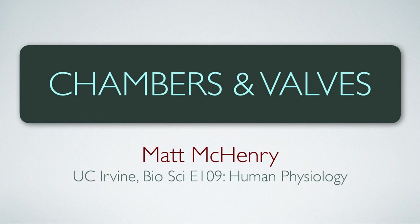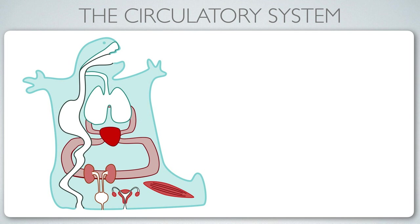We're going to talk about how the heart functions, focusing on the chambers and valves of the heart. This continues our discussion of the circulatory system. Early on, I emphasized the importance of the circulatory system for bulk transport of nutrients to the body. Here's a cartoon showing the heart as a major vessel that delivers blood to the lungs, where gas exchange occurs.